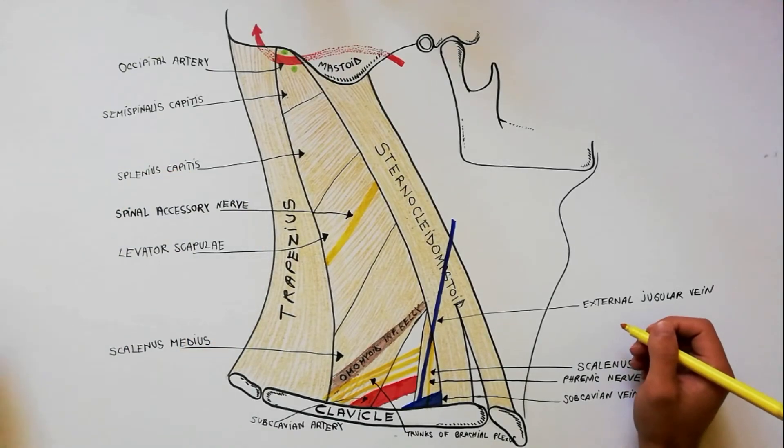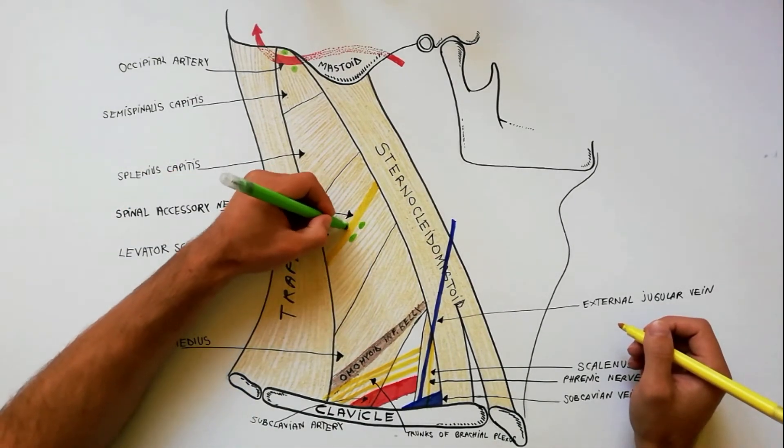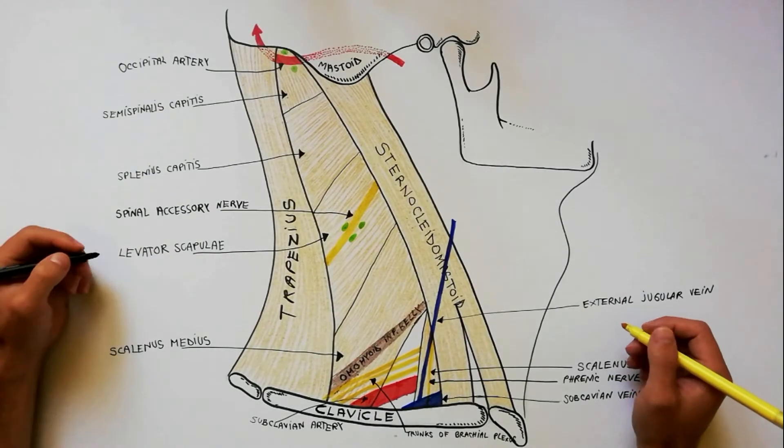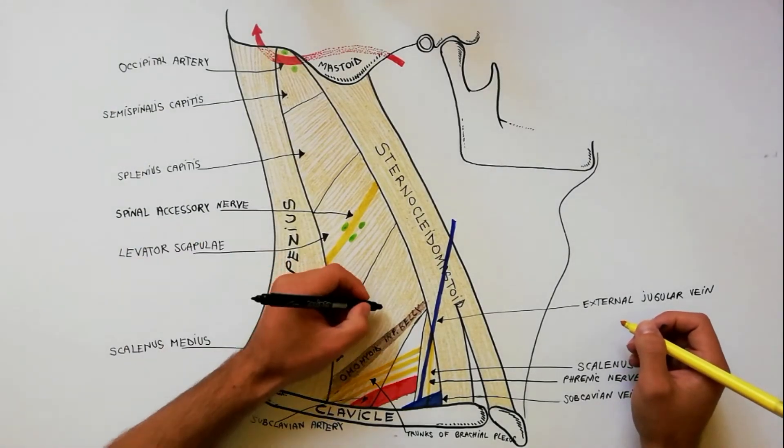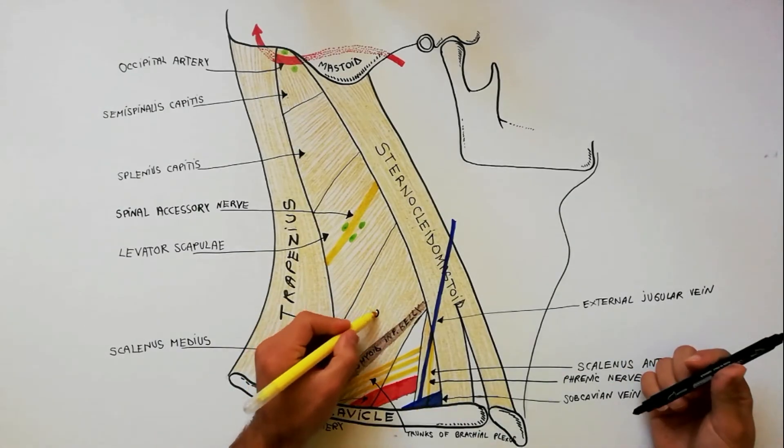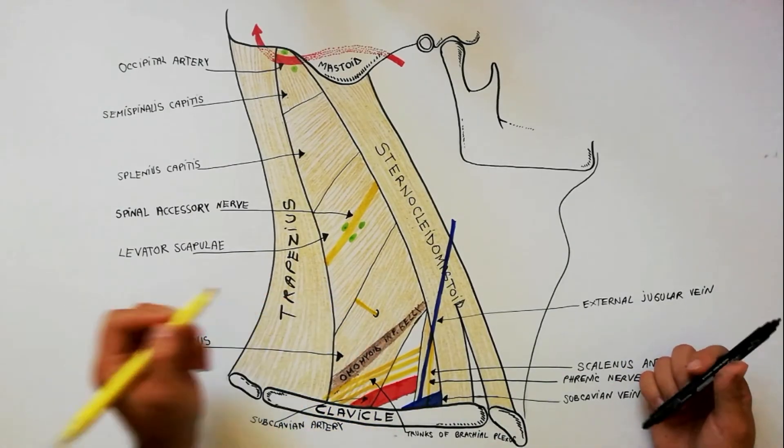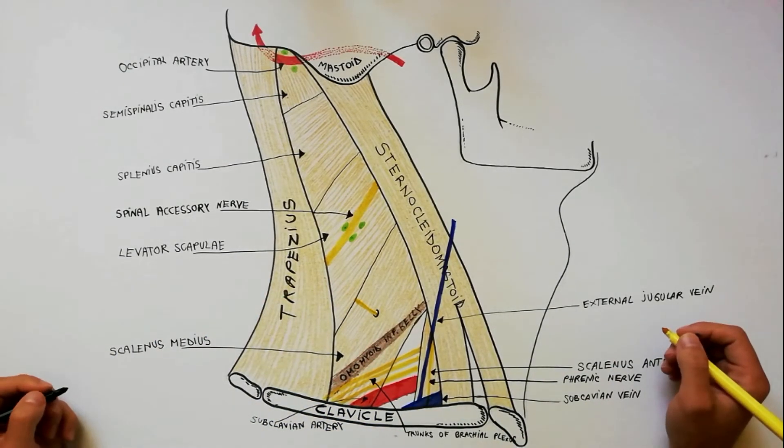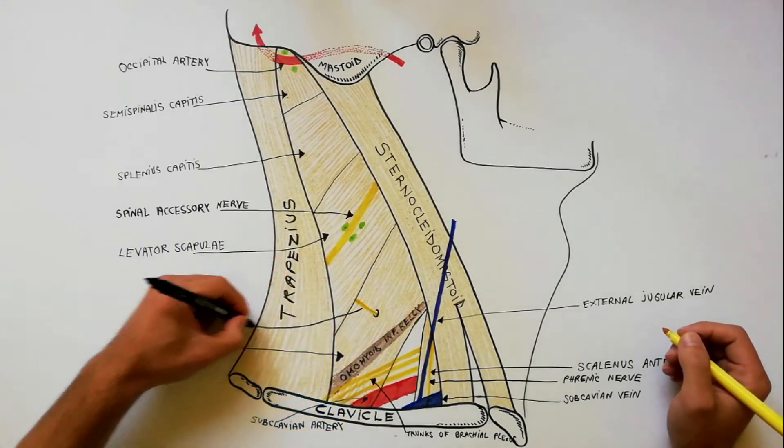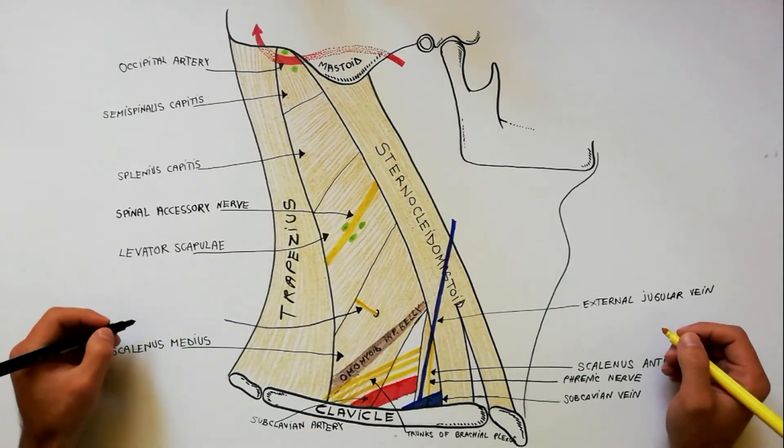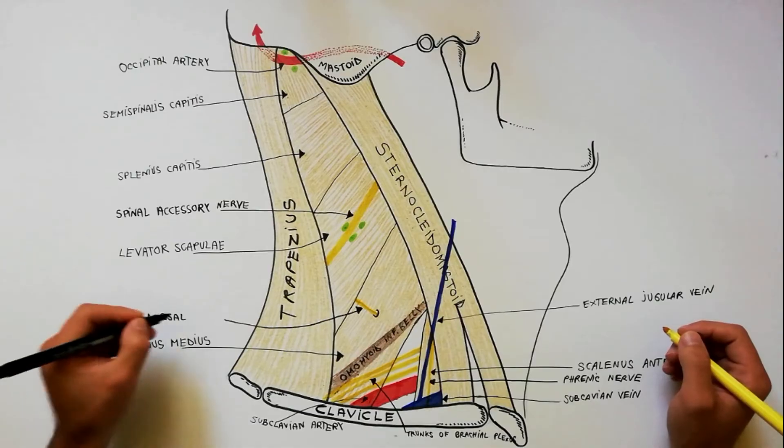Some lymph nodes are present along the spinal accessory nerve. Dorsal scapular nerve arises from C5 root of brachial plexus. It pierces the scalinus medius and runs laterally across it to pass deep to levator scapulae, which it supplies.